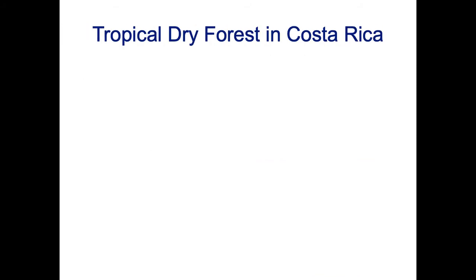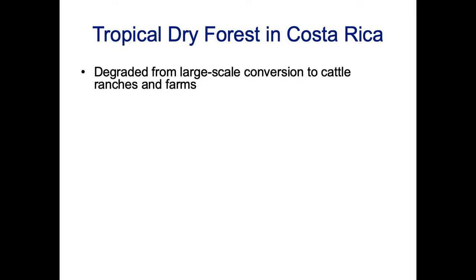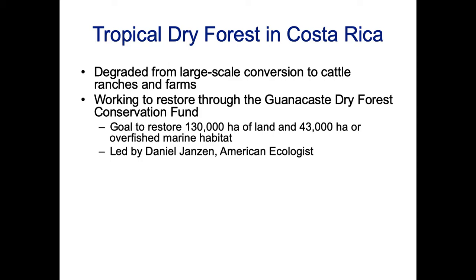Another type of restoration project is an example in the tropical dry forest in Costa Rica, where some areas were degraded from large-scale conversion to cattle ranches and farms. They've been working to restore these ecosystems through the Guanacaste Dry Forest Conservation Fund. The goal is to restore 130,000 hectares of land, and also to restore some marine habitat nearby.